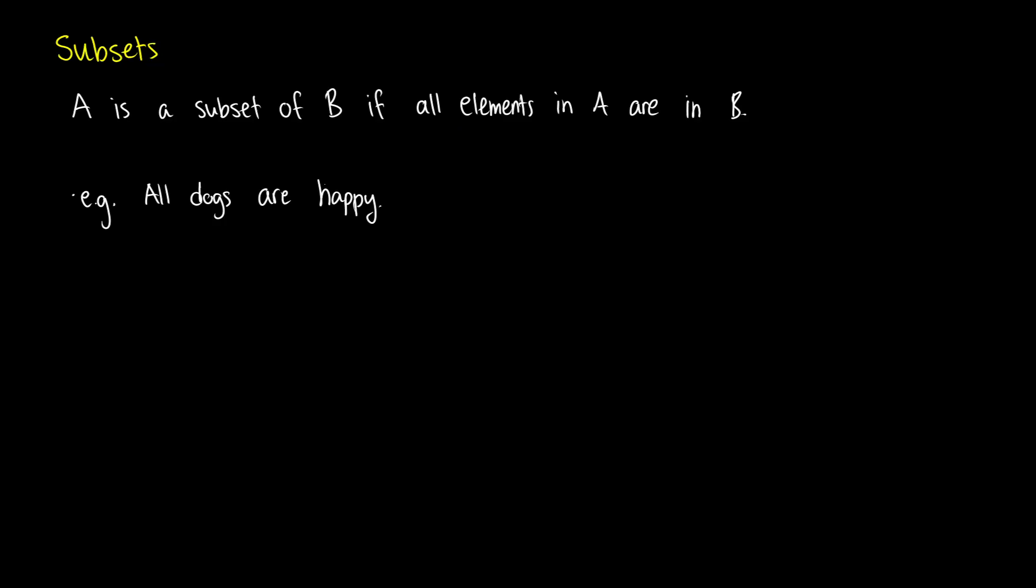Sets by themselves are kind of boring, but we can introduce the concept of subsets and make things more interesting. We say that A is a subset of B if all the elements in A are in B. So let's say we have our set A with elements A and B, and then we have another set B with elements A, B, and C. A, B is a subset of A, B, C because each of these elements are also in our bigger set. You'll notice that a circle is always contained inside a larger circle if you have subsets.